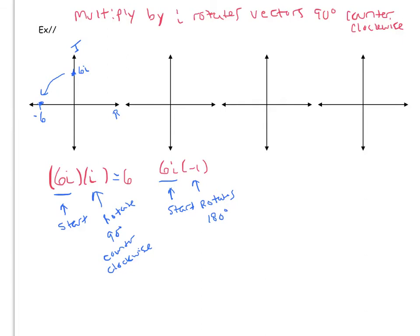So how would we represent that? Well, here's 6i, and rotating 180 degrees would bring me down here to negative 6i. And of course we know that's what you get when you actually do the multiplication out too.